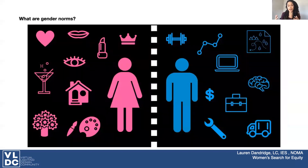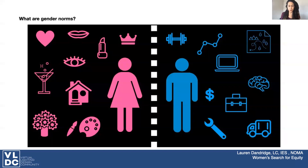If you couple that with this idea of gender, then you have sort of two sets of behavioral norms that are dictating how we live our lives. So the term gender was really popularized in the 1970s by feminists who were trying to really distinguish the roles between male and female behaviors, preferences, and things that were more socially constructed rather than biological.